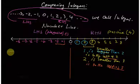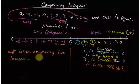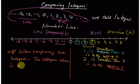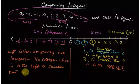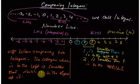So our conclusion when comparing two integers: the integer which is to the left is smaller than that which is to the right of it. That is what we can conclude.